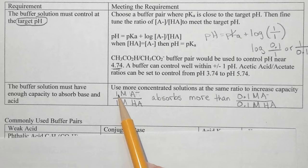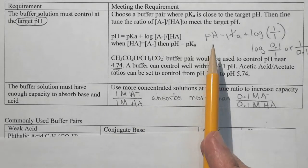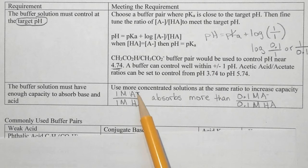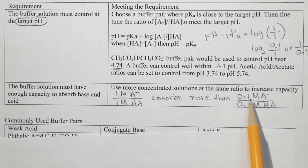The buffer also must have enough capacity to absorb the base and the acid. So if we use more concentrated solutions then we increase the capacity. For example, we could use one molar in A minus and one molar in HA and we would have pKa equals pH and we could absorb whatever quantity we have up to one molar. However, if we only use 0.1 molar, we would still have the same pH but we would have a much lower capacity.